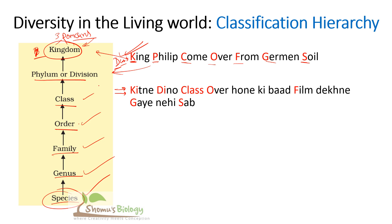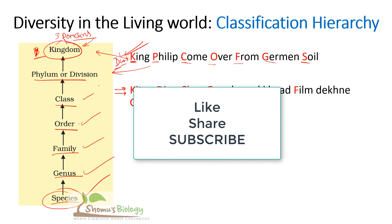So 'King Philip come over from German soil,' or 'Dumb King Philip come over from German soil,' is the easy way to remember the classification hierarchy. That's it for this video. If you like this video please hit the like button; if not, hit the dislike button. If you have any better tricks to remember any of these, share them in the comment section so we can make a video on that with you in the credits. Thank you everyone, bye.